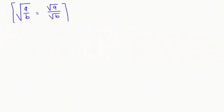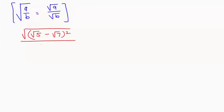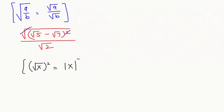So I'm going to apply here the radical rule that is root of a over b. This square and this root get cancelled. So according to absolute value property, I can write root of x whole to the power of 2 as the absolute value of x. So I'm going to write this as the absolute value of (root of 5 minus root of 7) over root of 2.